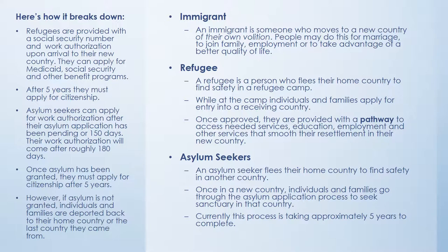Asylum seekers can apply for work authorization after their asylum application has been pending for 150 days. The work authorization will come roughly 180 days after it's been submitted. Once asylum has been granted, they must apply for citizenship after five years. However, if asylum is not granted, individuals and families are deported back to their country or to the last country they came from.